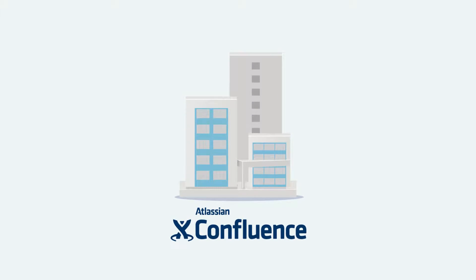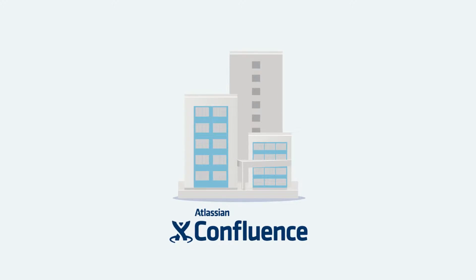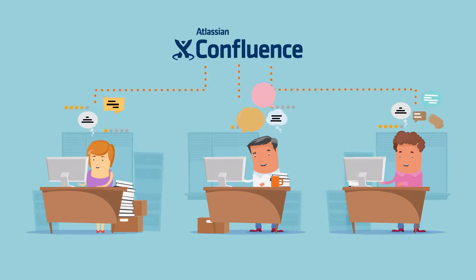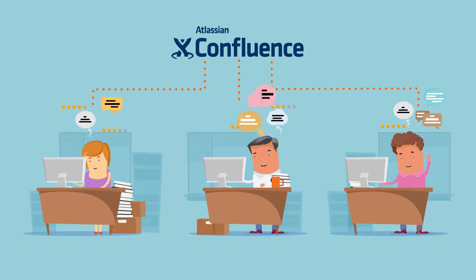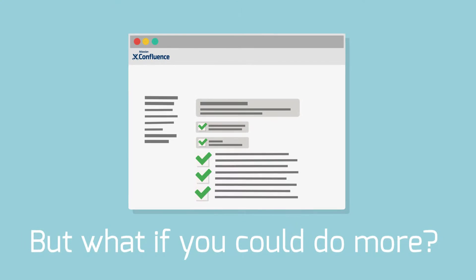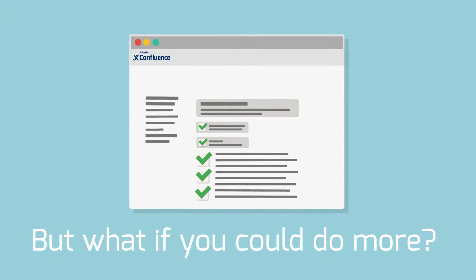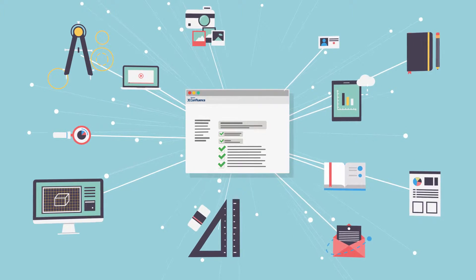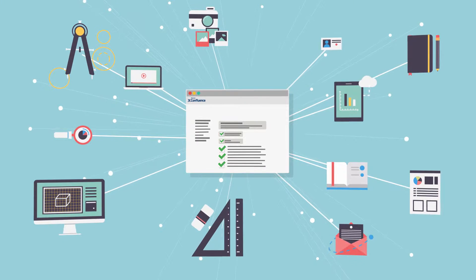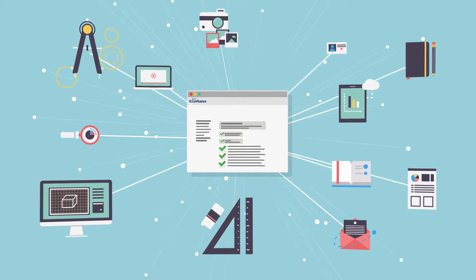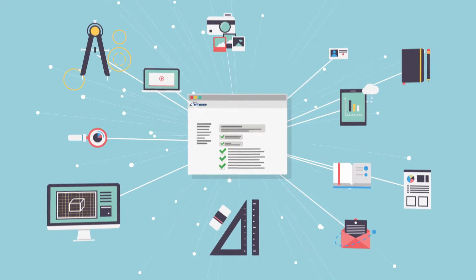Confluence allows you to collaborate with your whole company, discussing ideas and knowledge that is bringing everyone on your team forward. How is this possible? Through one fixed user interface. But what if you could do more? What if you're able to adjust Confluence to convey your company's values and its design, and make those functions you need the most available exactly where you need them?